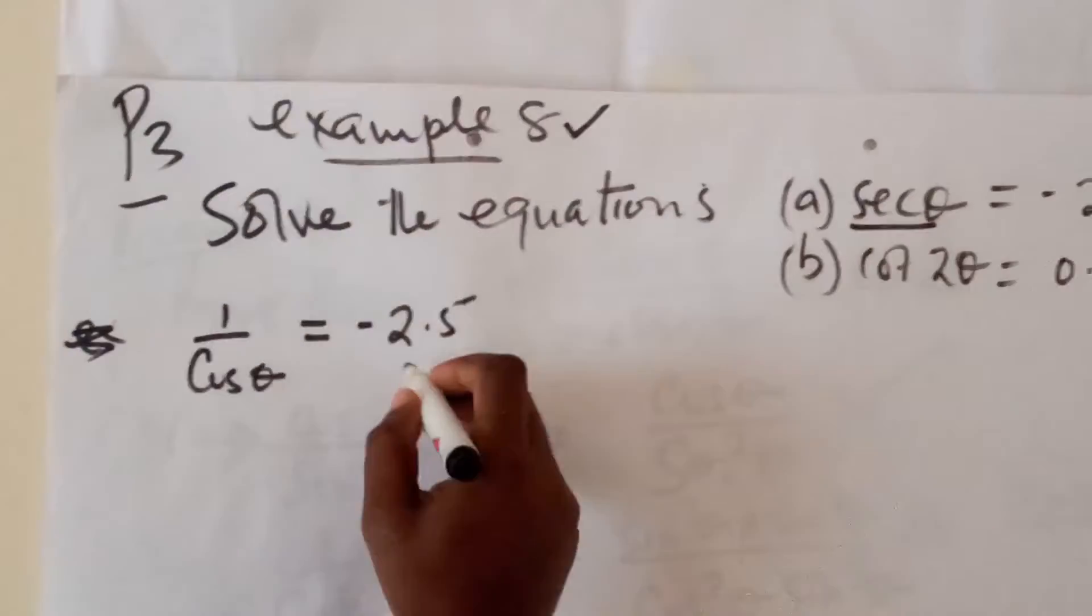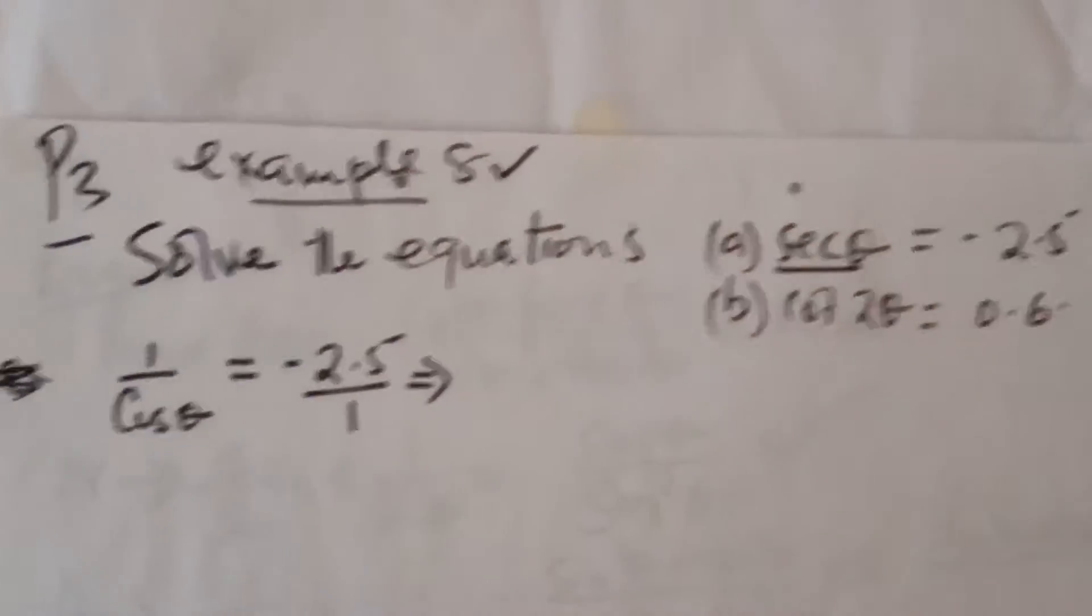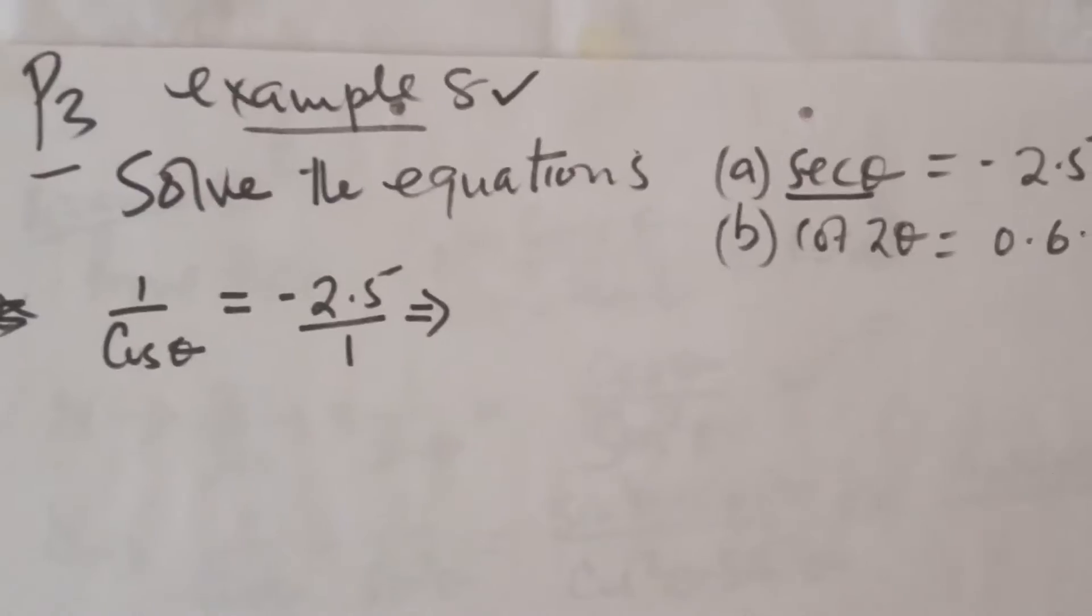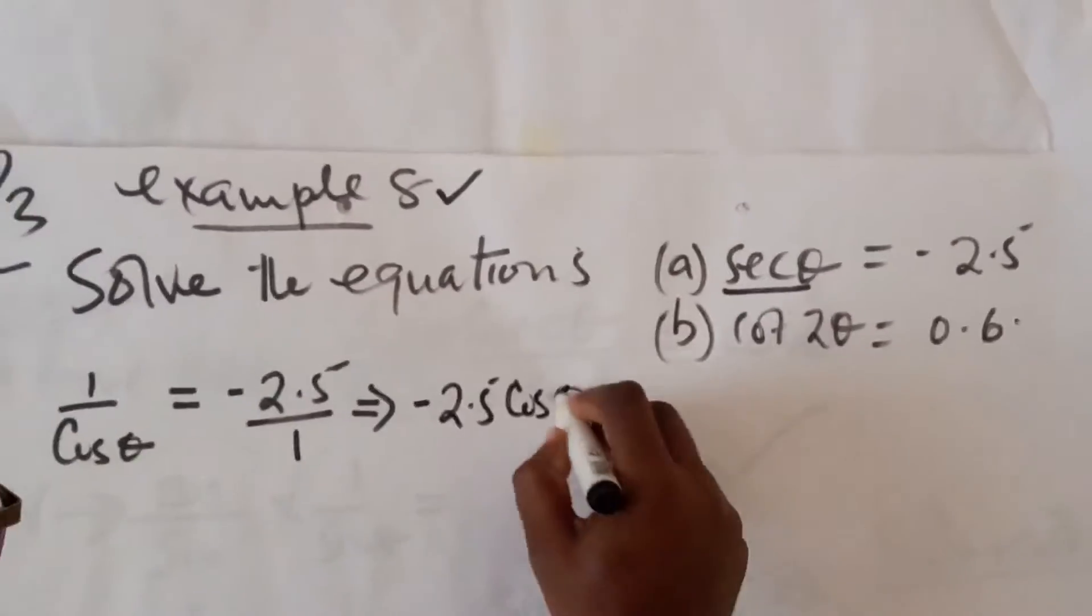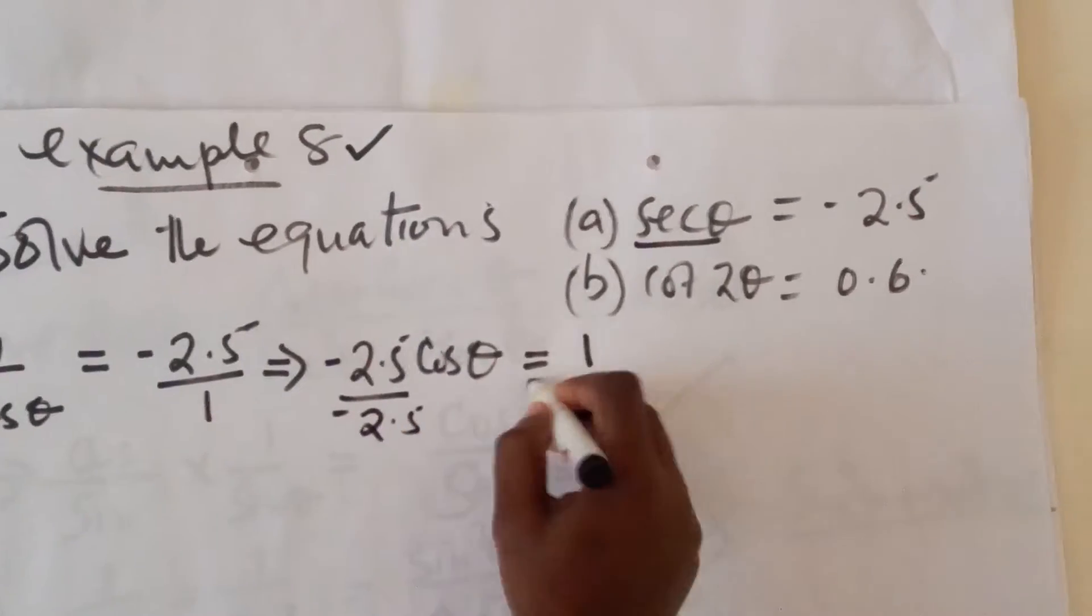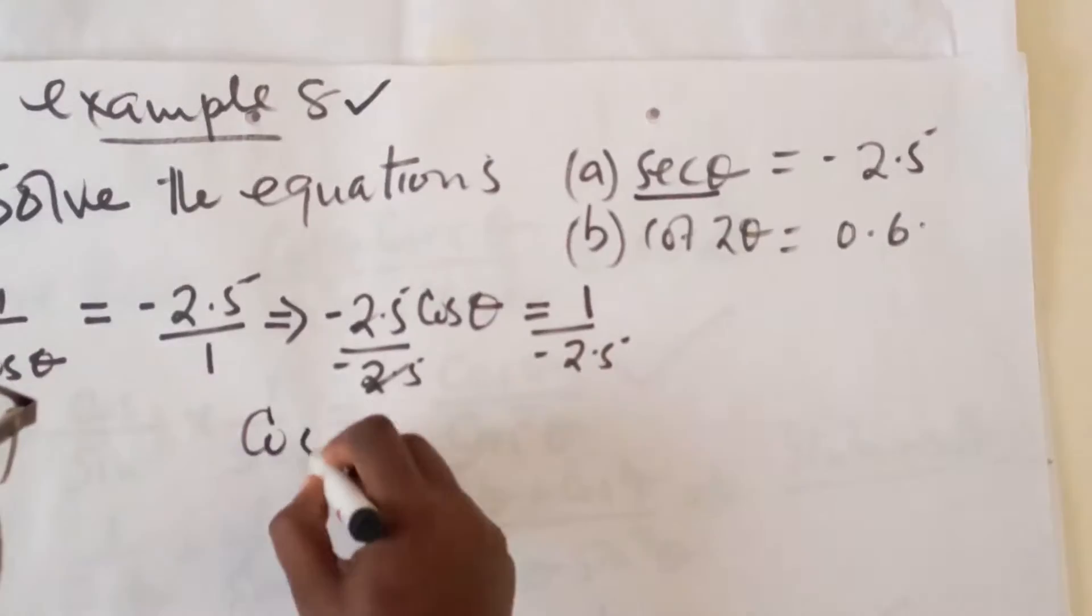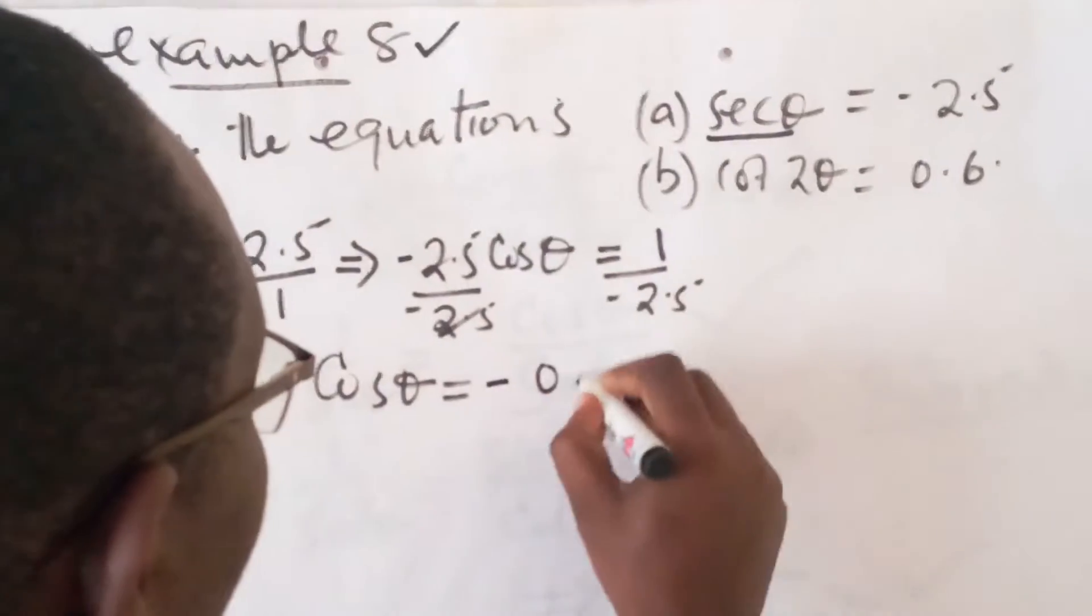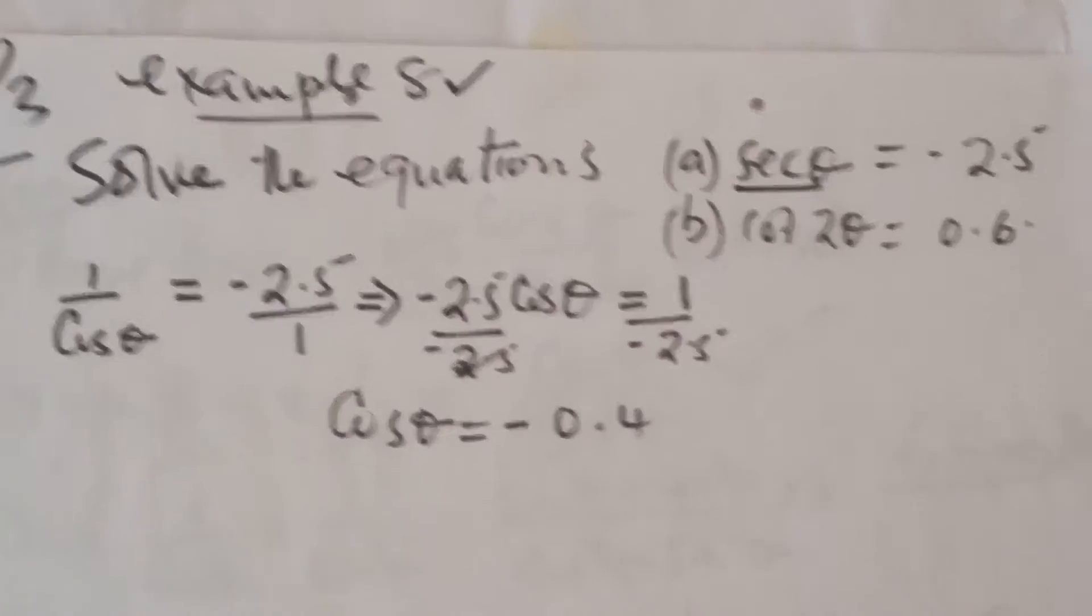When we have this, if we cross-multiply because we are interested in making the cosine of theta the subject of the formula, we have minus 2.5 cosine of theta equals 1. When you divide by negative 2.5 on both sides, it follows that cosine of theta is negative 0.4, because 1 over negative 2.5 is negative 0.4.